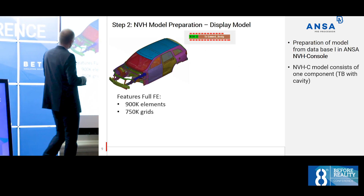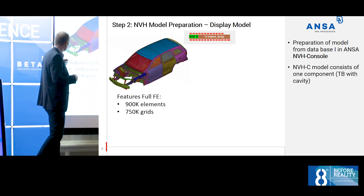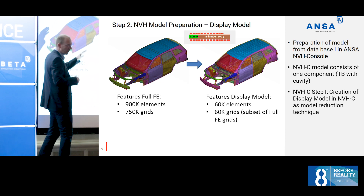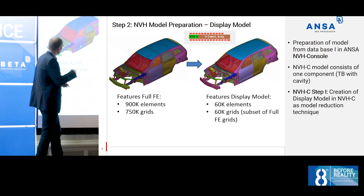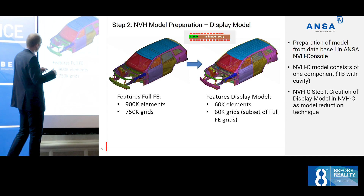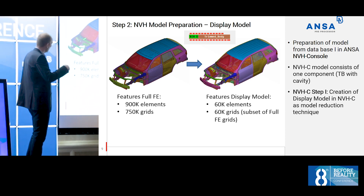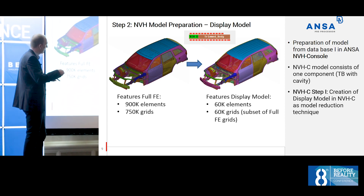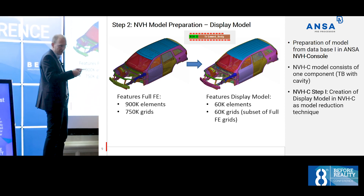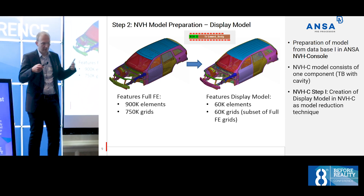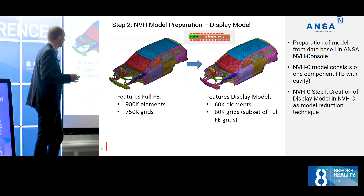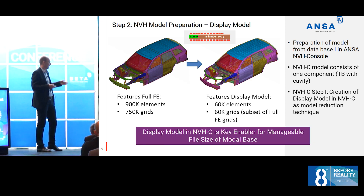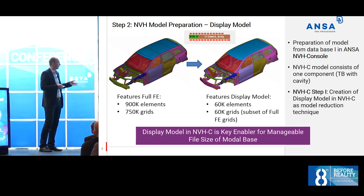In the NVH part, first we take the model and create a display model. A display model has a much coarser mesh than the full model. The idea is you do the calculation on the fine mesh, but for a couple of output nodes — which are in the display model — you get the results. That makes everything much smaller: the model and also the result files, because we need result files for all the modes. The display model is the key enabler to have manageable file sizes of the mode base.